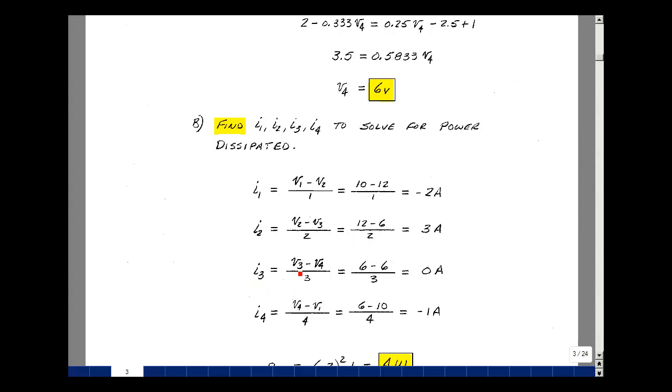I3 we found to be V3 minus V4 over 3, but V3 was 6, and so was V4. It's 0 amps, and that's possible. We'll have nothing in a particular element. Lastly, I4 we found to be V4 minus V1 over 4, which is 6 minus 10 over 4, minus 1 amp.